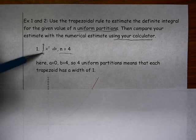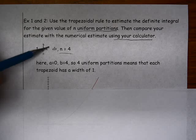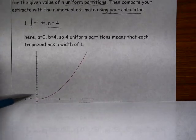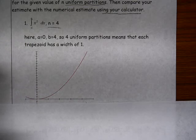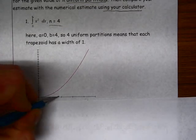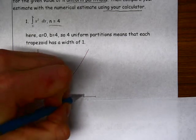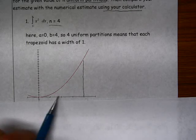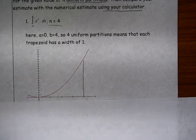So the definite integral from 0 to 4 of x squared dx is just the area between the function x squared and the x axis between x equals 0 and x equals 4. So we're really trying to estimate this area using trapezoidal approximations.